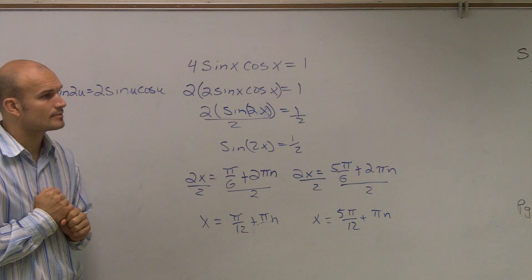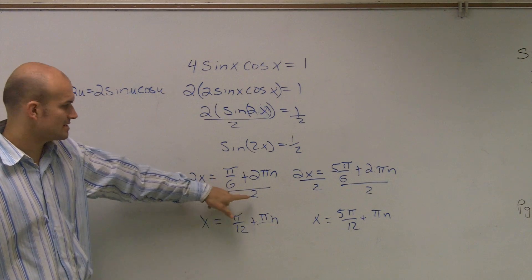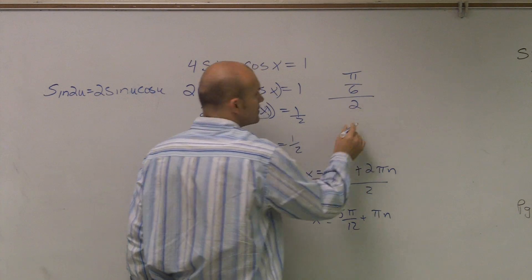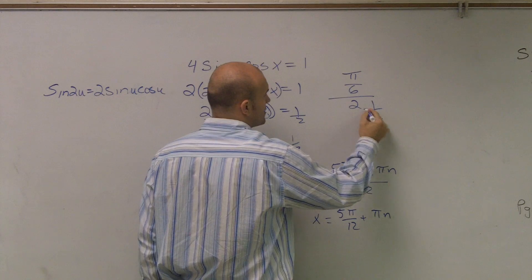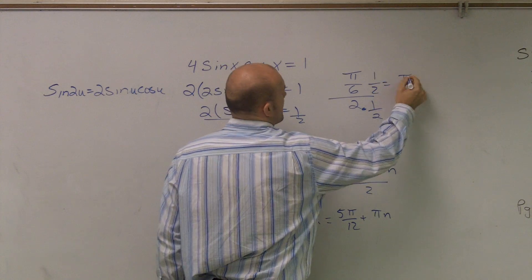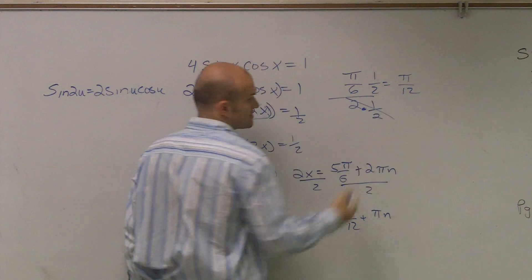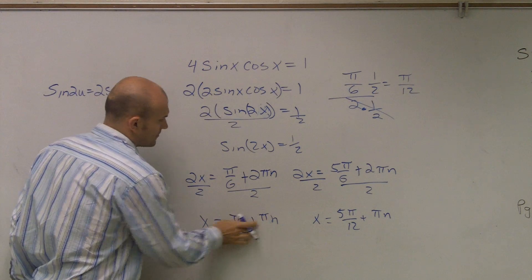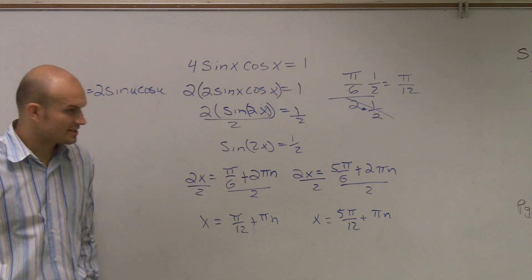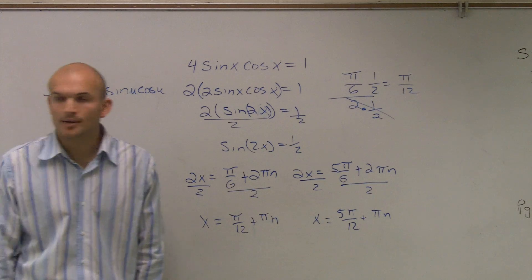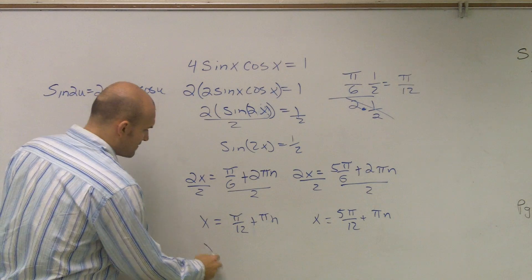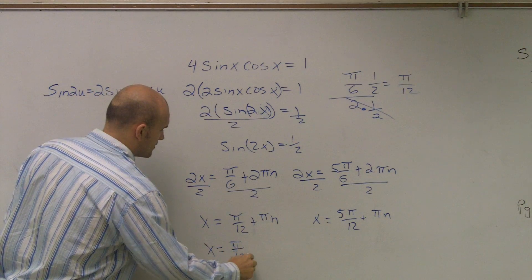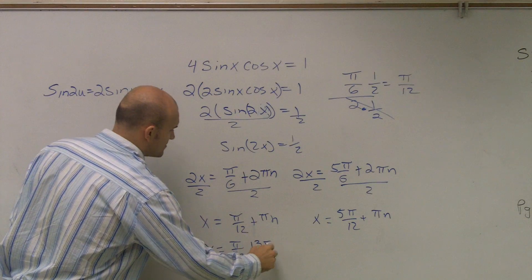Because if you just do pi over 6 divided by 2. Divide it by 2. To get rid of that, you multiply it by the reciprocal. Because that cancels out to 1. So now when I take a look at this, and if I was just going to add pi, which would be 12 over 12, I get my final answers are x equals pi over 12 comma 13 pi over 12.